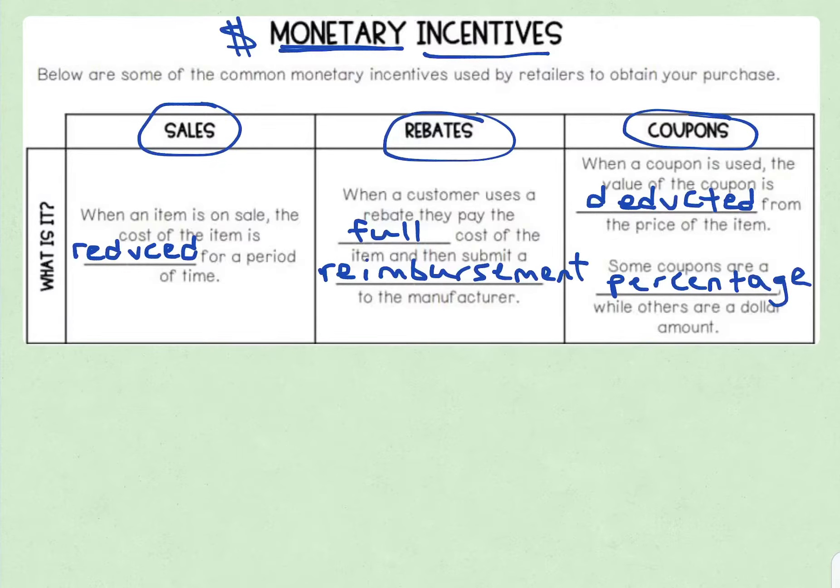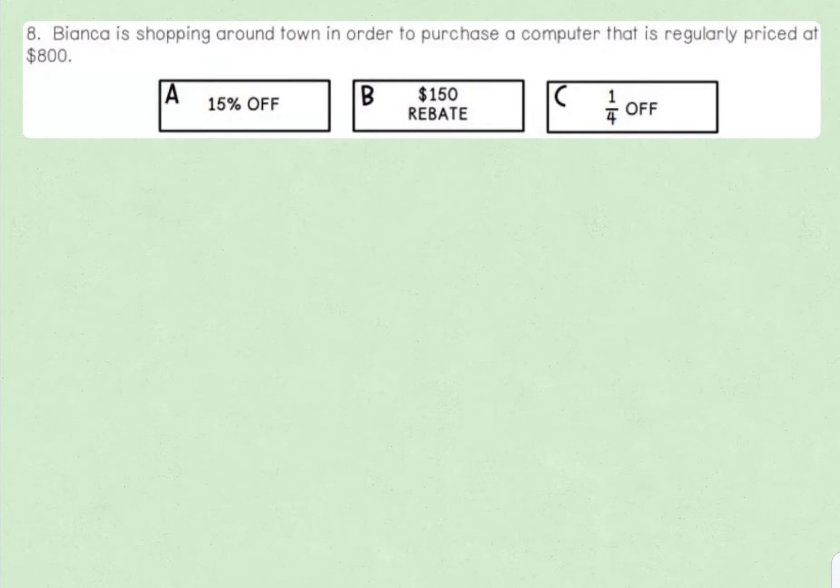So now we're going to look at the calculation part. These are the types of things we're going to be looking at. Now we have to calculate them. So for our example, Bianca is shopping around town in order to purchase a computer that is regularly priced at $800. So this is the price we're going to be looking at. And we're going to look at three different things. We're going to look at what the price would be if 15% was off, if $150 rebate was applied, and also if we have a fraction off.